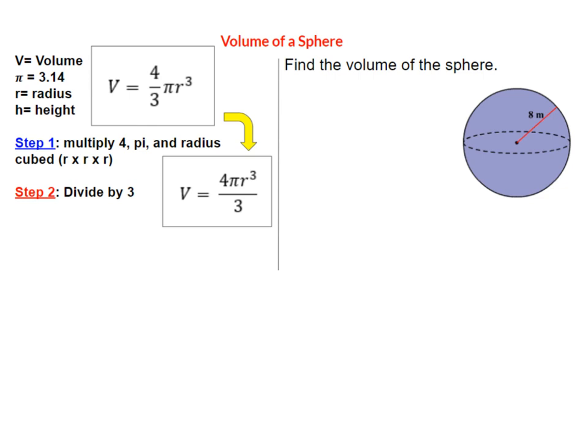One way I like to break this up is to focus on just multiplying the four pi and radius cubed. So step one we're going to multiply four times pi times radius times radius times radius. That's what radius cubed means. And then on step two we'll take on the divide by three. So that's why I kind of rewrote the formula right here.